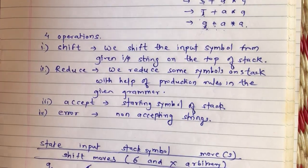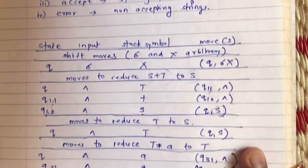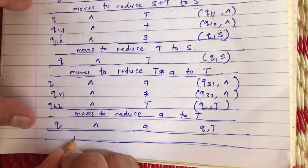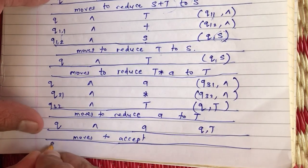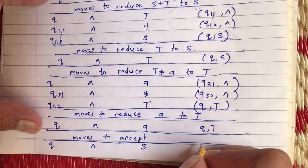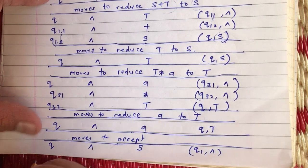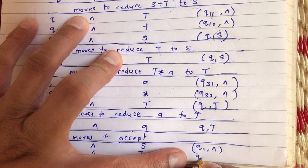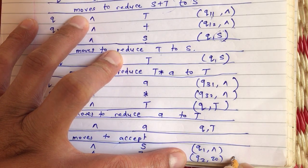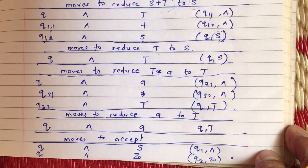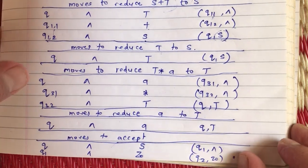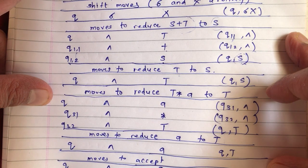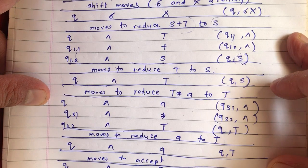Shift moves and reduce moves are now done. For acceptance, when state Q has S on top of stack, we go to state Q1 and pop S; then in Q1, when Z0 is on the stack, we go to Q2 with Z0, which is acceptance. This completes the final transition table for the bottom-up PDA — which is non-deterministic — for the given grammar of algebraic expressions.